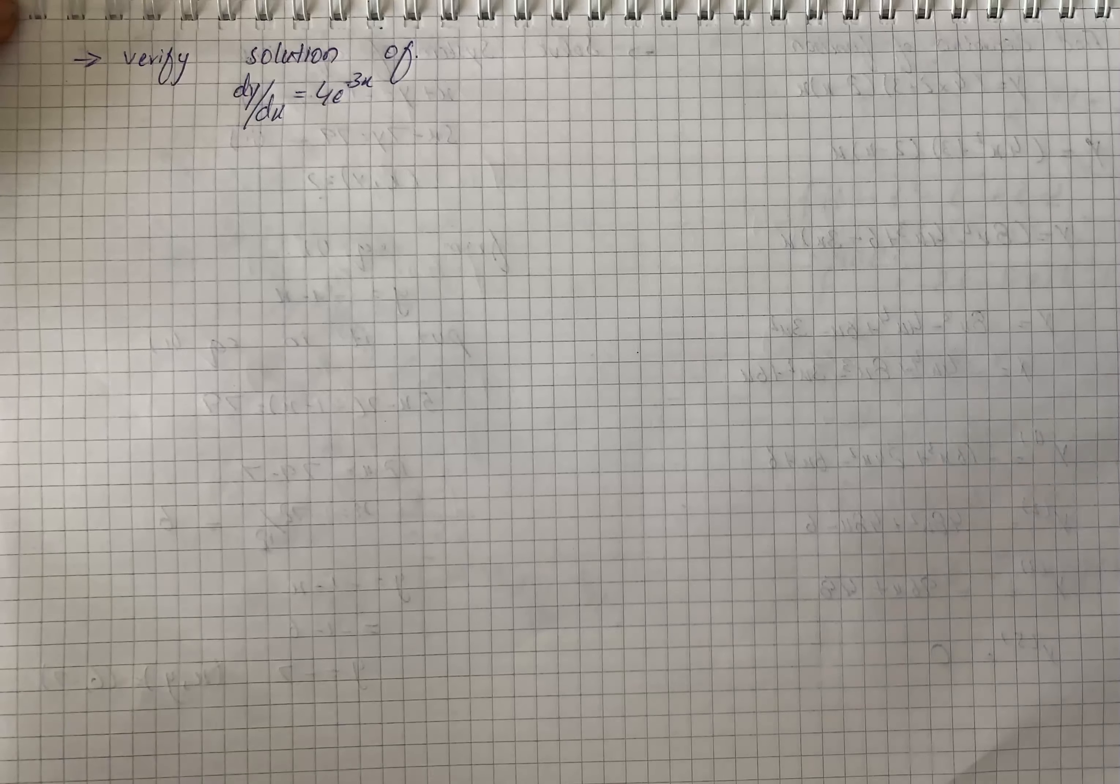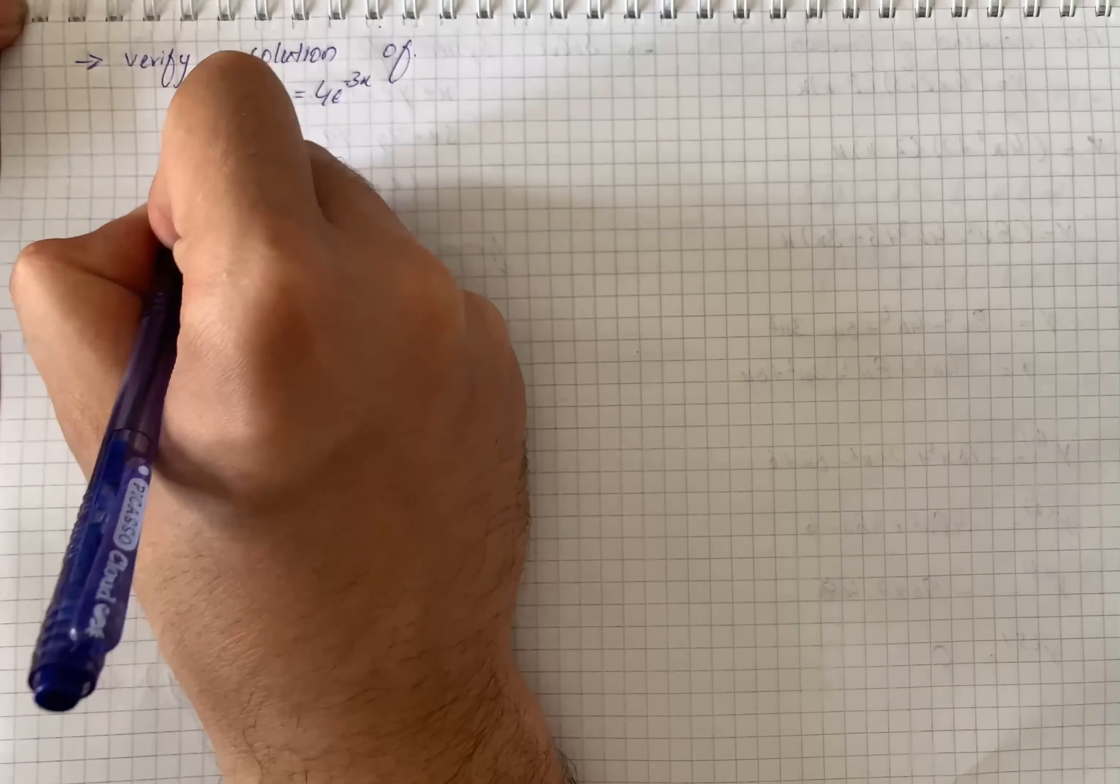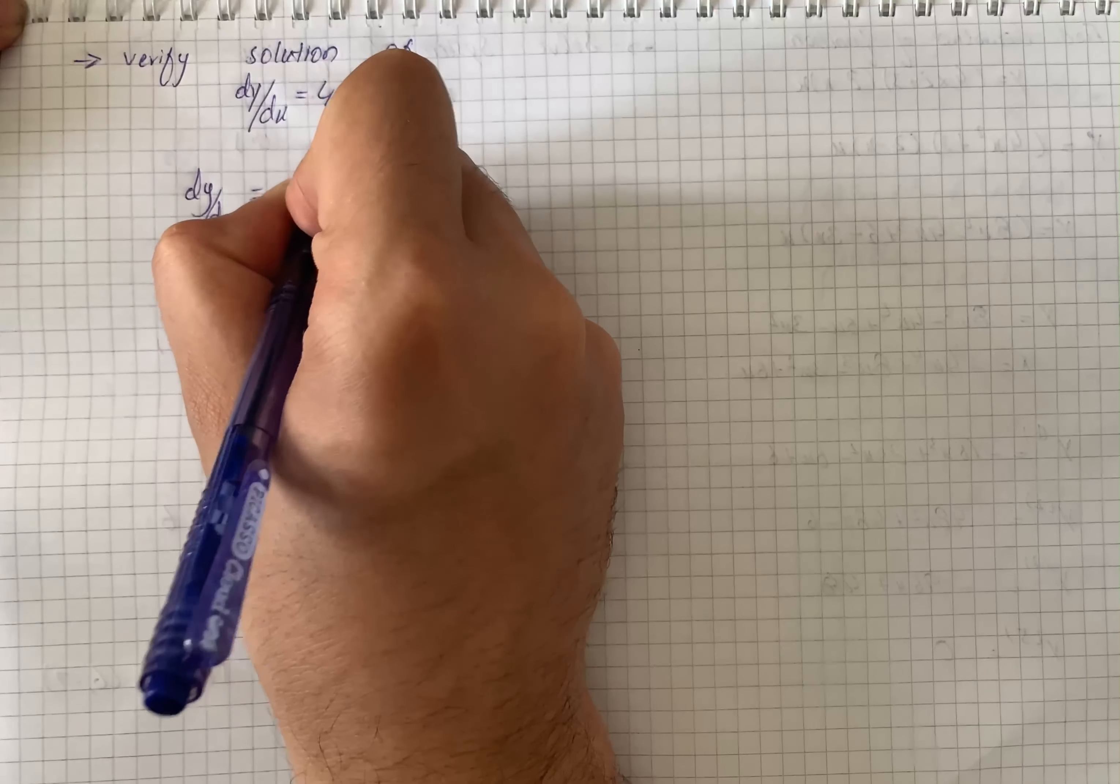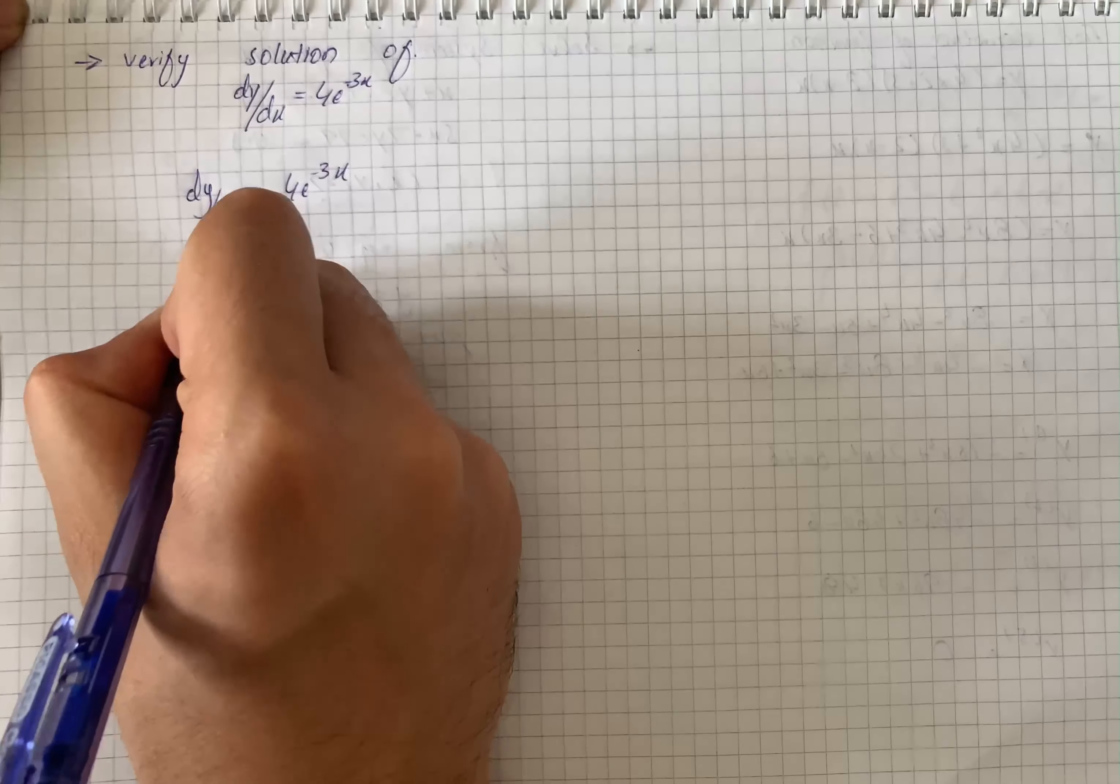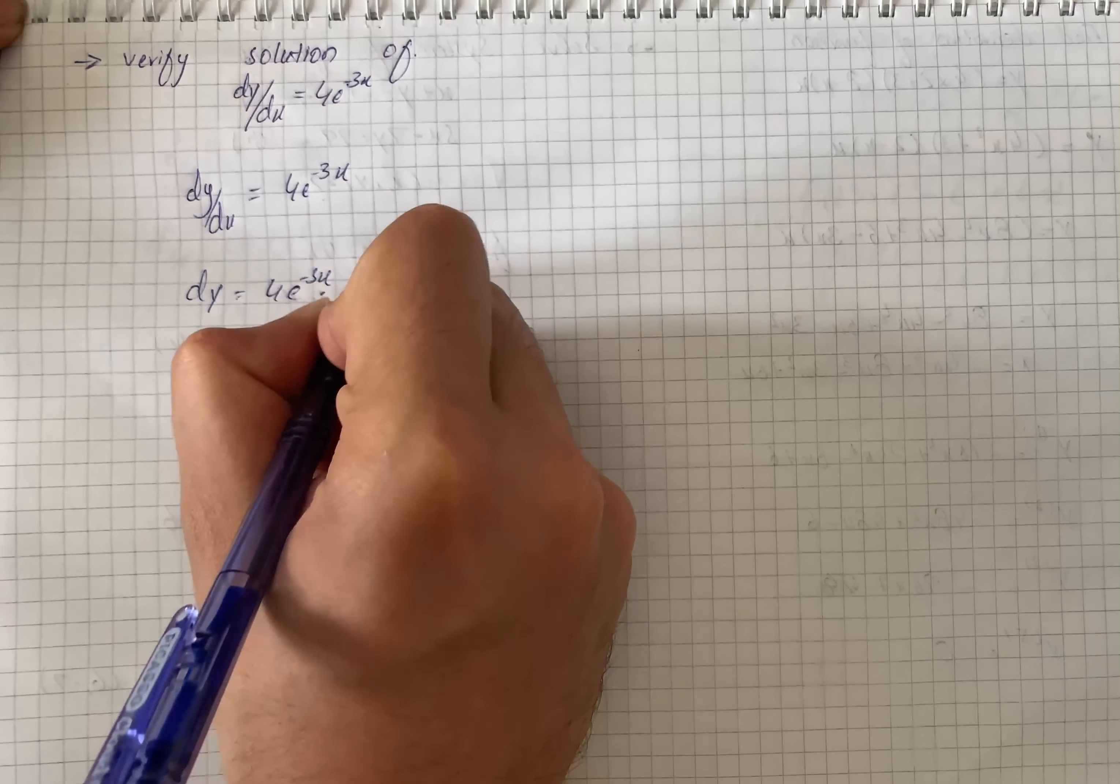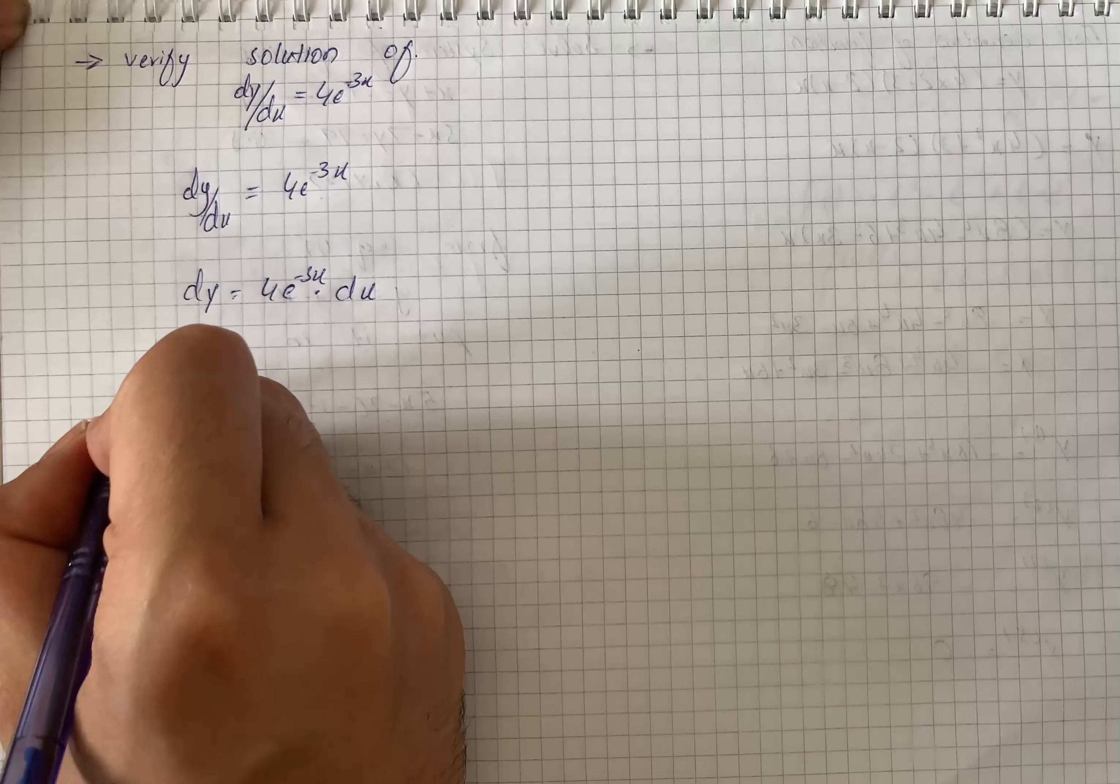So here we have a question and we have to verify the solution. To verify the solution, we will solve this type of differential equation. We have dy over dx equals 4e raised to the power minus 3x, then dy is equal to 4e raised to the power minus 3x into dx.